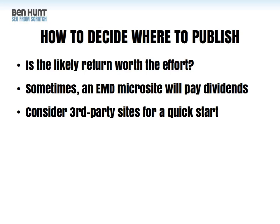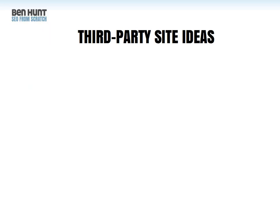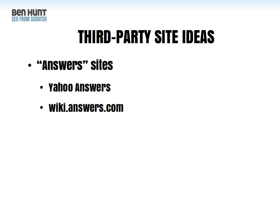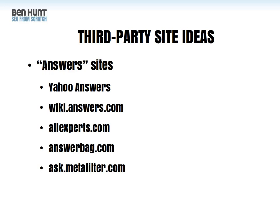You may also want to consider third-party sites to get a quick start, especially if you own no websites already. Publishing on other people's sites can be a really good way to start getting traffic. There are a number of answers sites out there — you've probably heard of Yahoo Answers, also Wiki Answers, All Experts, Answer Bag, and one at Metafilter. Answers sites aren't really for publishing articles as such, but you could find people who are asking specific questions. If these pages are already ranking high on search engines, consider posting your own answer. You could even post your own question and answer it yourself using a different account, and some sites will let you include links back to your content.